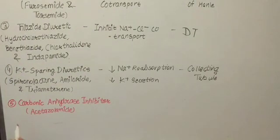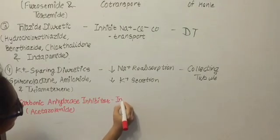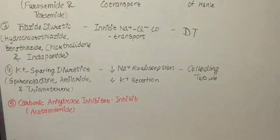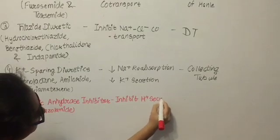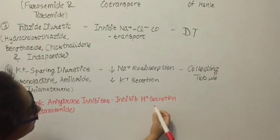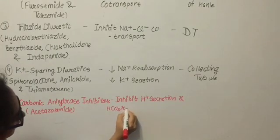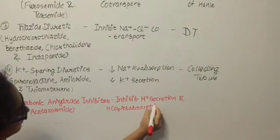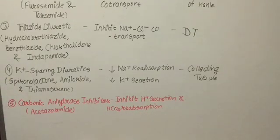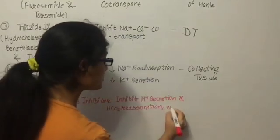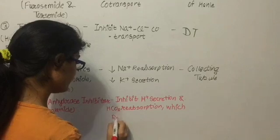Carbonic anhydrase inhibitors include acetazolamide. Mechanism of action: it inhibits hydrogen secretion and HCO3 reabsorption, which reduces sodium reabsorption. And it acts on the proximal tubule.